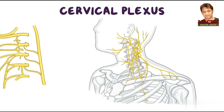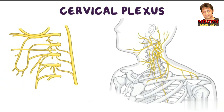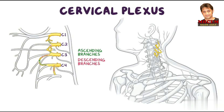The anterior rami of the spinal nerves C1, C2, C3, and C4 form the roots of the cervical plexus, which is an irregular series of nerve loops and the branches that arise from these loops. Each participating ramus, except the first, splits into ascending and descending branches, which unite with branches from neighboring spinal nerves to form the loops.